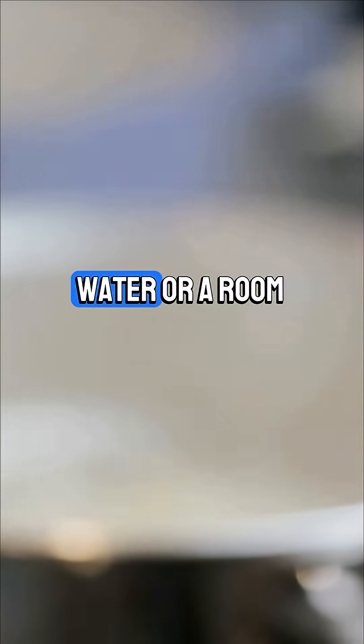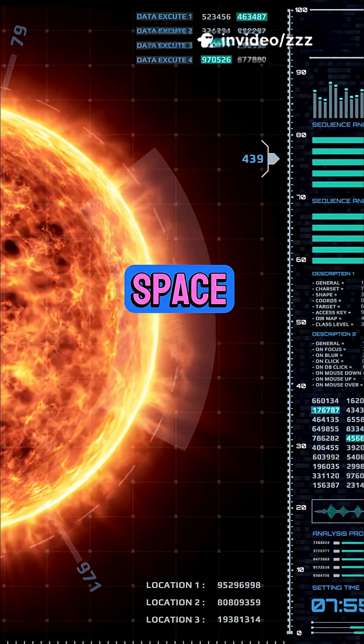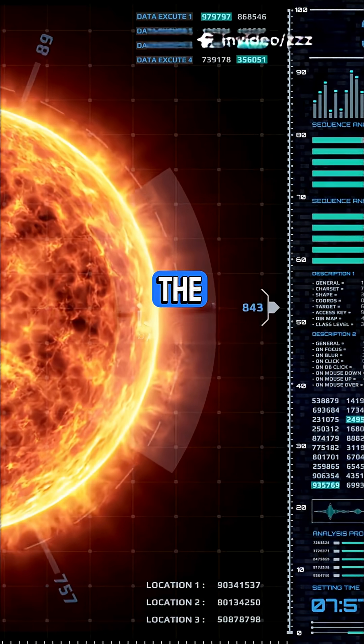This creates convection currents. Examples include boiling water or a room heater. Radiation: can heat travel through space? Yes, the sun.